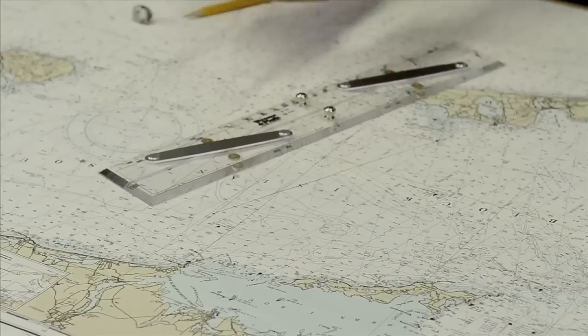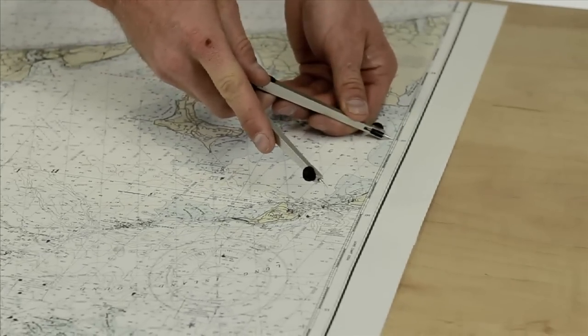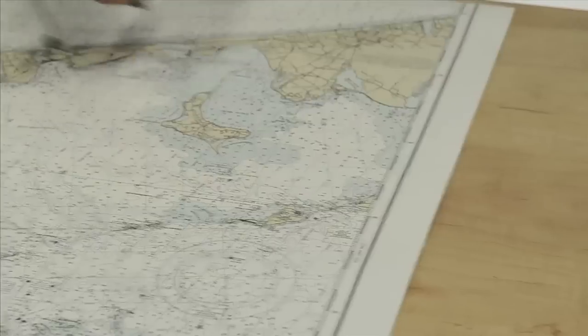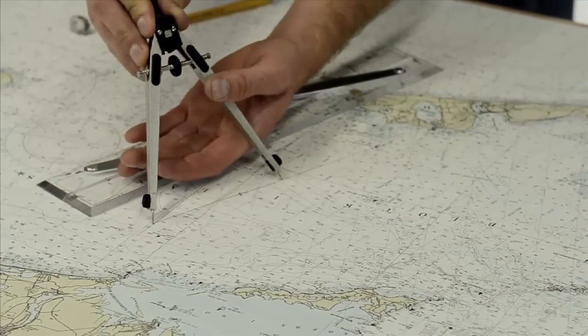Now take our dividers to measure the distance of this line. Come over to the latitude scale and set five nautical miles so we can walk the distance of the line. Begin at the start point. Five.